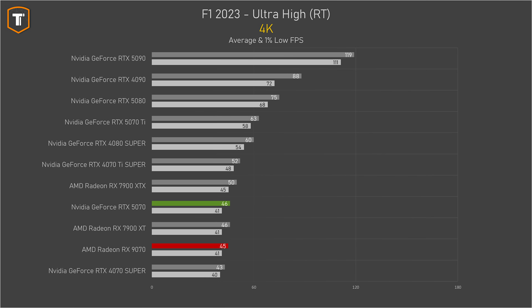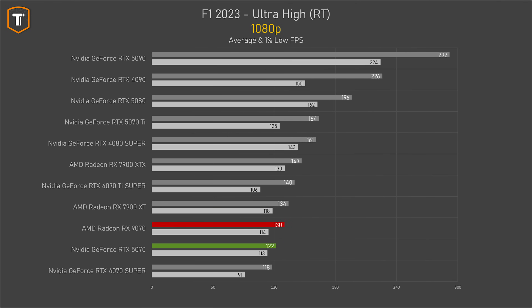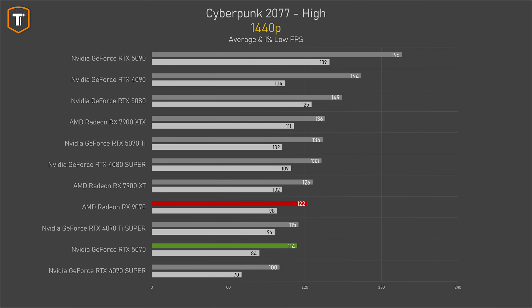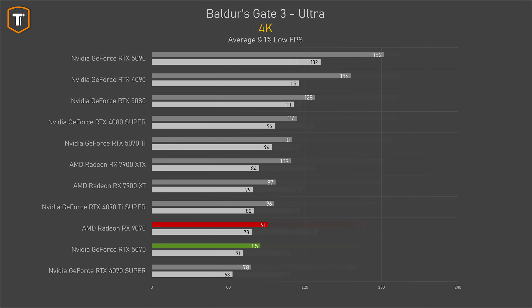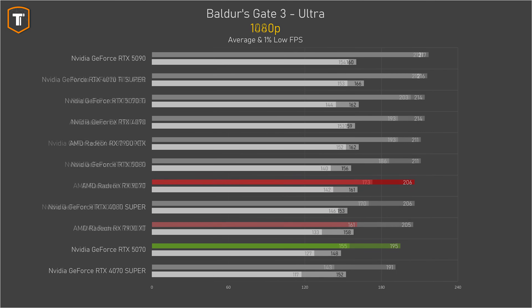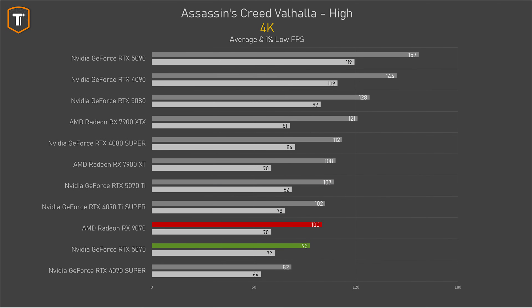In Formula 1 2023 on ultra settings, which include some light ray tracing effects, the 5070 just beats the RX 9070 by a single frame, and both cards remain very close across all resolutions. In Cyberpunk 2077 — NVIDIA's showcase title for a couple of years — the RX 9070 ended up ahead by about 13 percent at 4K, with the gap shrinking at lower resolutions. In Baldur's Gate 3, the 9070 is about 7 percent ahead at 4K native, though both cards handle the game fine.